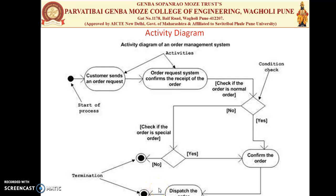The elements of the activity diagram include: first, the activity performed by the system; second, the association from one activity to another; third, the condition under which activities are related or associated with each other; and the constraints.